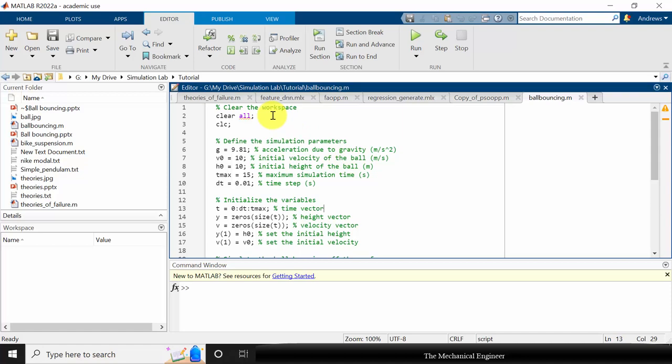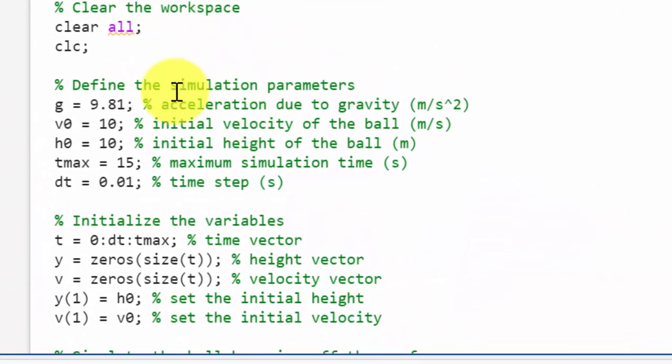Here is the MATLAB code I have constructed. First I am going to define the simulation parameters. g I have given, v0 is the initial velocity I have given as 10, and h0 is the initial height which I have provided as 10. tmax is the maximum simulation time, I have given 15 seconds, and dt is the time step which I have provided as 0.01.